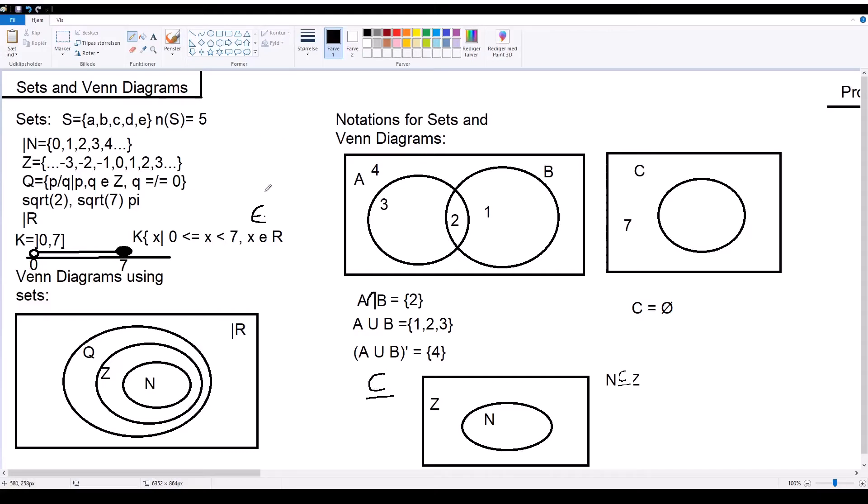When talking about Venn diagrams and sets, it's important to start with defining what a set is. A set is essentially just one of these characters which represents everything which is in here. Everything in here is called an element, and they're notated with these brackets. Everything in between these brackets are elements of set S, for example. The way you know how many elements are in a set is with N. So, N(S) equals 5 because there are 5 elements in the set S.